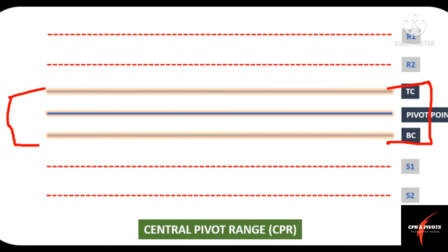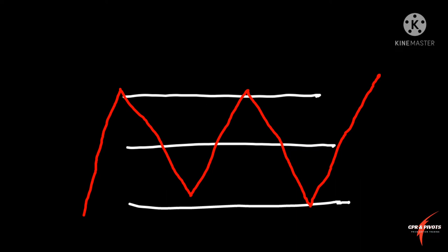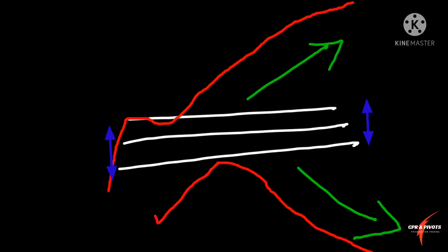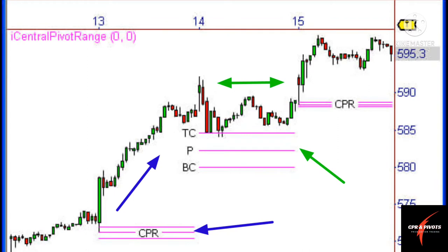Below the CPR, there are two supports — S1 and S2. The center three lines are the Central Pivot Range, which has Top CPR, Bottom CPR, and Center CPR. When the CPR is very wide, the market is in a sideways range most of the time. When the CPR is very narrow, the market is in a trend — either upside or downside. So a narrow CPR indicates a trend day and a wide CPR indicates a sideways day.